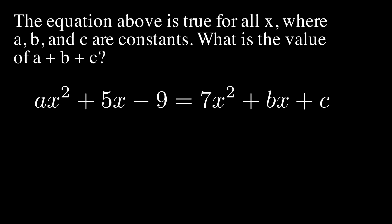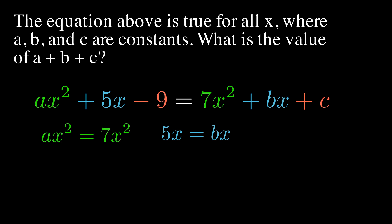In this simpler type of constants question, all we're going to have to do is match the terms. Notice I'm highlighting X squared in green, X in blue, and the constant in red. I'm going to set all of those terms equal to each other. In order for those terms to be equivalent, it's necessary that their coefficients are equal. So A is going to have to equal 7, B is going to have to equal 5, and C is going to have to be negative 9.